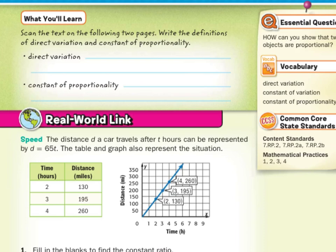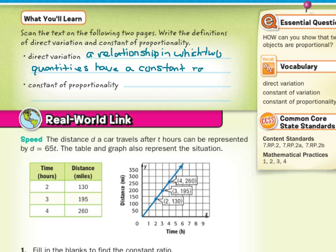If we were to write the definitions of direct variation and constant of proportionality, direct variation is a relationship in which two quantities have a constant ratio. As for constant of proportionality, this is the constant ratio in a direct variation.